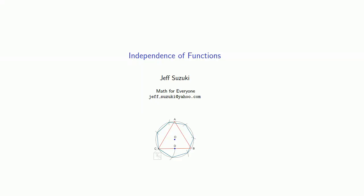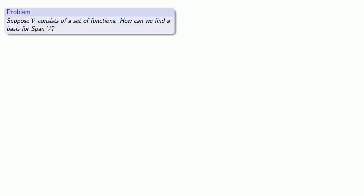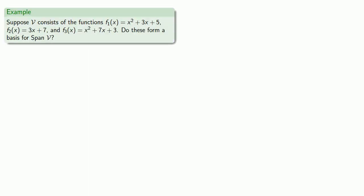An important extension of the notion of independence occurs when we consider our vectors to be functions. Suppose v is a set of functions. How can we find a basis for the span of our set of vectors? A good way to start the analysis is to try and solve a specific example of this kind of problem. Suppose our set v consists of the functions f1(x), f2(x), and f3(x). Do these form a basis for the span of our vectors?